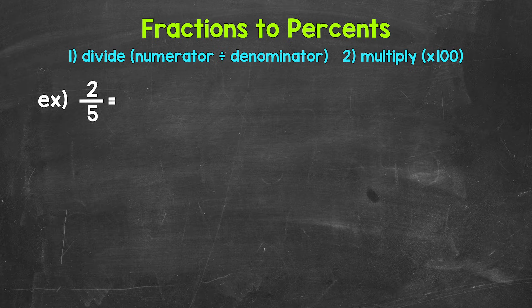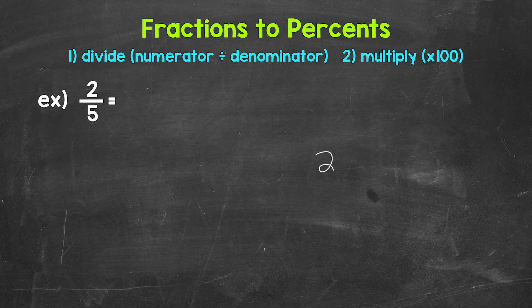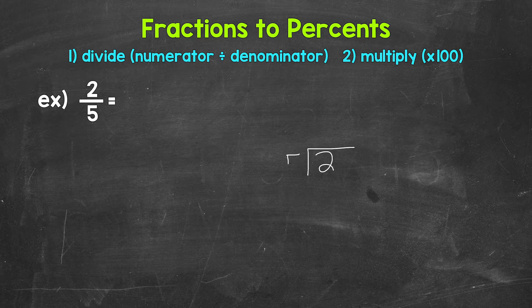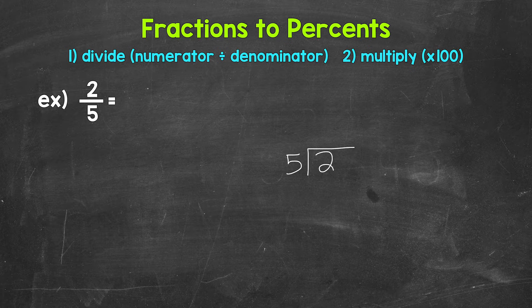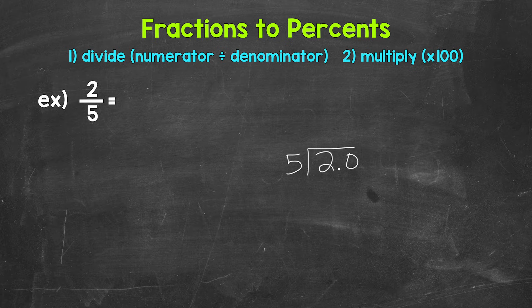So we need to start by converting this to a decimal by dividing. So for two-fifths, we can set this up as two divided by five. And now we're able to work through the division process. So we have two divided by five. How many whole groups of five in two? How many fives in two? Well, we can't do that. So we need a decimal and a zero in order to work through this.